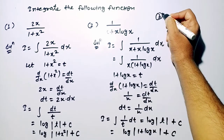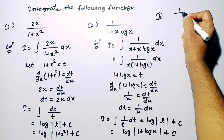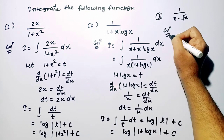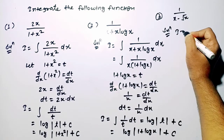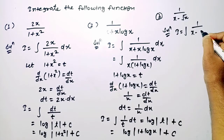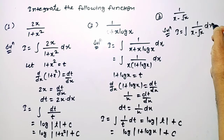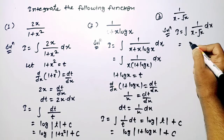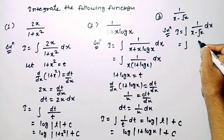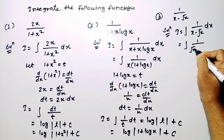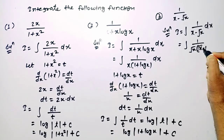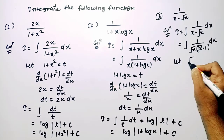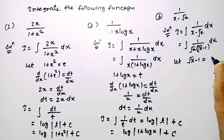The next question is 1 upon x minus root x. I equals integration of 1 upon x minus root x dx. In the denominator, x can be written as root x times root x, so root x is common, giving root x into (root x minus 1). We consider root x minus 1 equal to t.